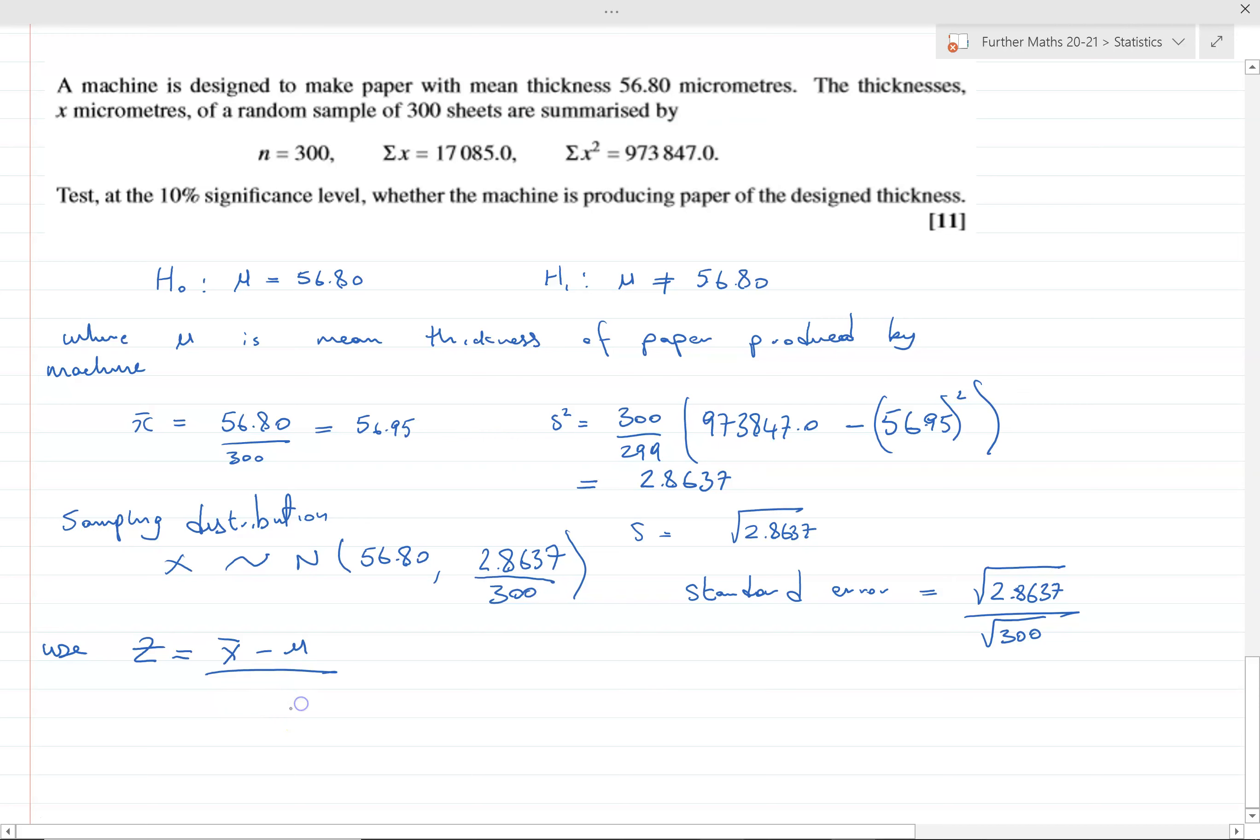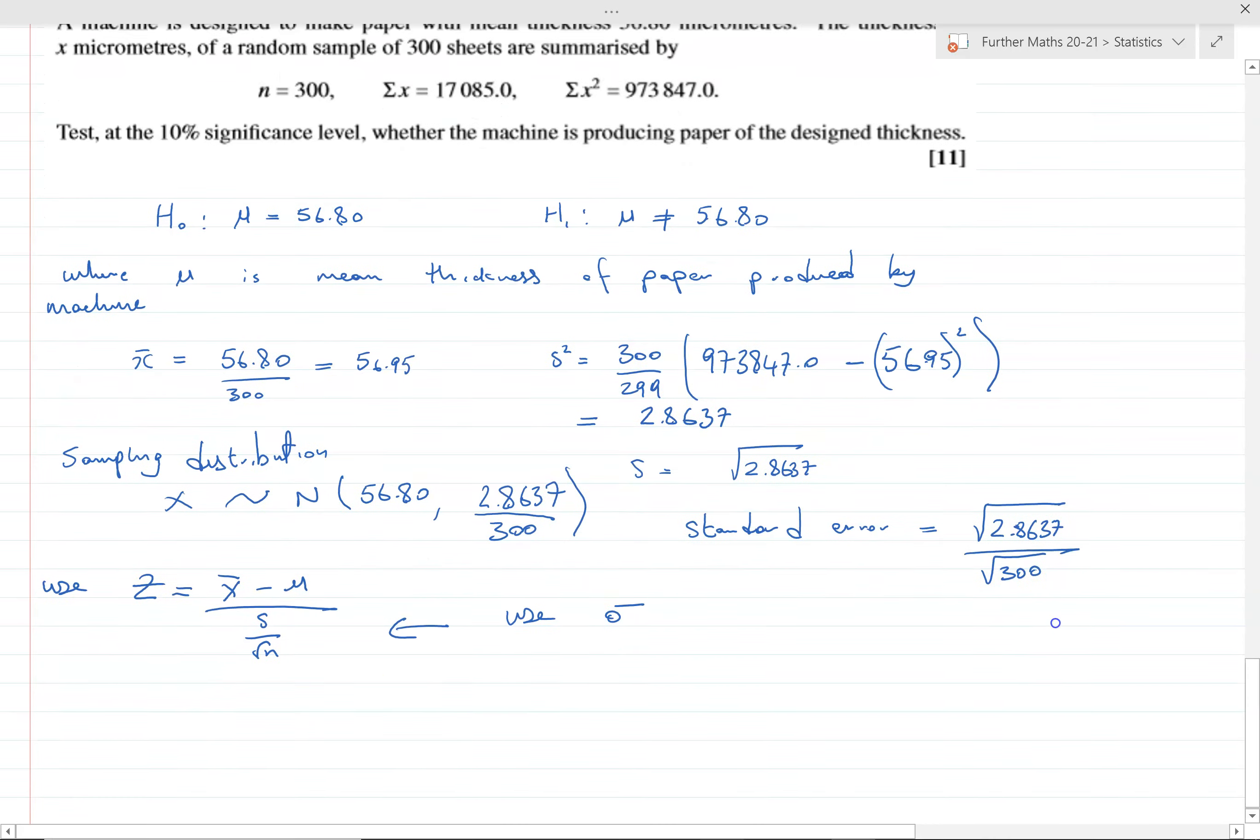We're dividing by s over √n. We would use σ if we knew with certainty what the standard deviation is, but we're presuming because the sample size is 300 that our sample standard deviation is going to be close to it, and we're using s because that's unbiased. That's our test statistic.